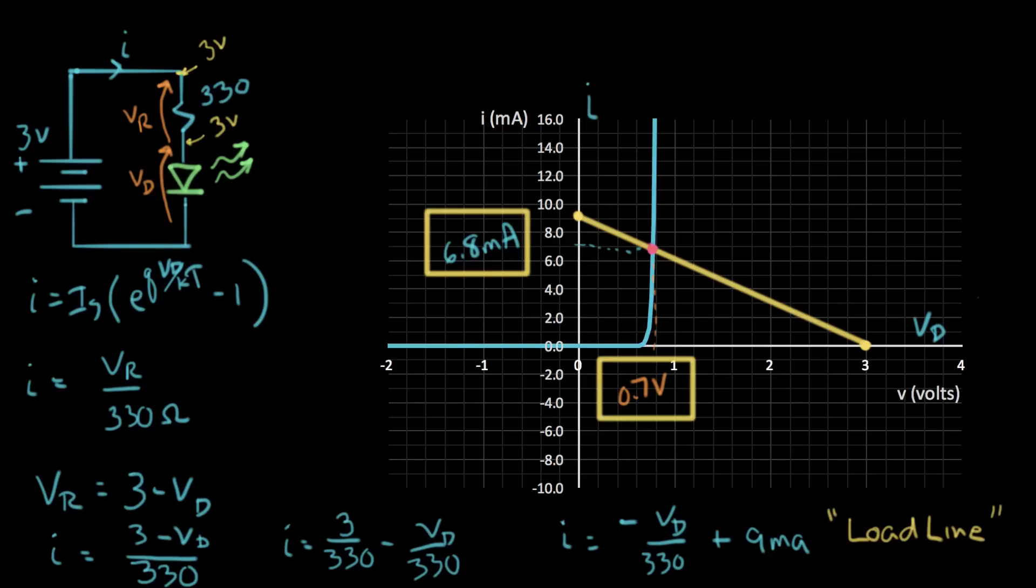And what that says is, let me erase this a bit to clean it up. Let me take out these two things here. That was just the resistor load line that we were talking about. And now for our solution, we have I equals 6.8 milliamps, and V diode equals about 0.7 volts. So that's how you do a graphical solution with a diode.